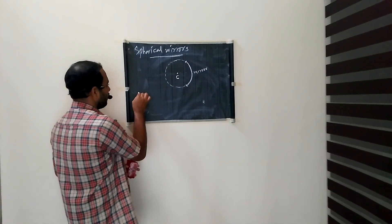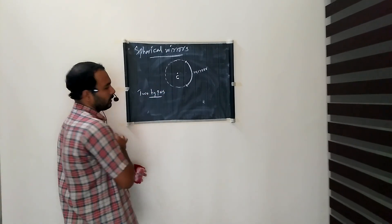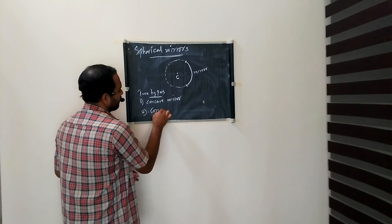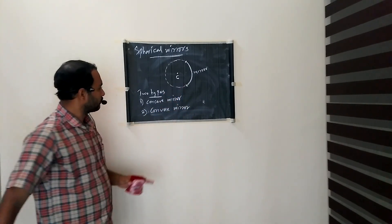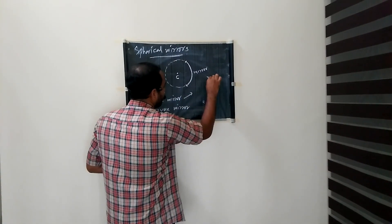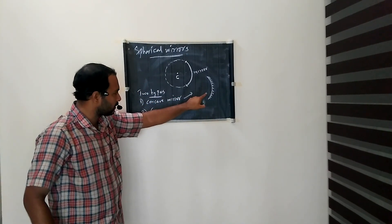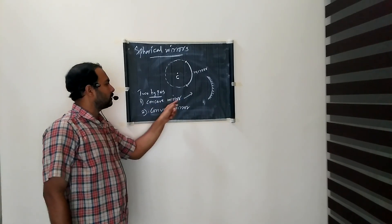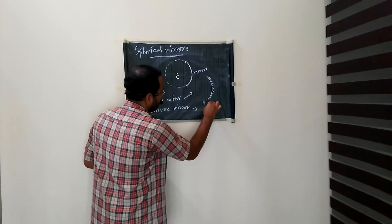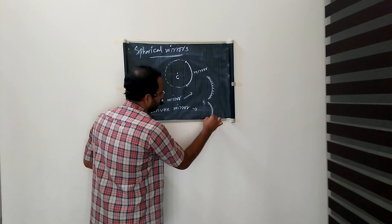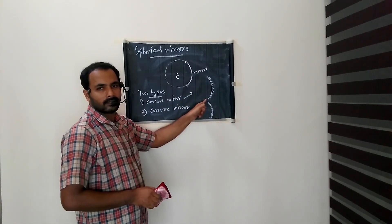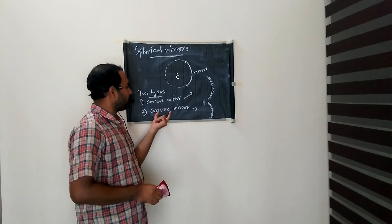Spherical mirrors are mainly two types. Number one is concave mirror, number two is convex mirror. A concave mirror means the reflecting surface is curved inwards. A convex mirror means the reflecting surface is curved outwards. The type of mirror where the inside is the reflecting surface is called a concave mirror, and the type where the outside is the reflecting surface is called a convex mirror.